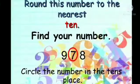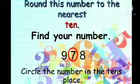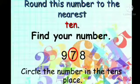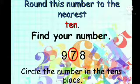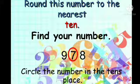Now, round this number to the nearest 10. For example, 978. What is the first line of the poem? Find your number. Here, we are asking nearest 10. So, circle the number in the 10th place.